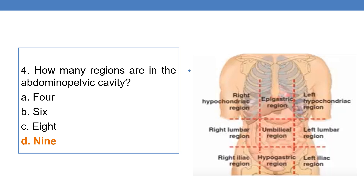Next question: how many regions are there in the abdominal pelvic cavity? This is very important. There are nine regions in the abdominal pelvic cavity. Those nine regions are: right hypochondriac region, epigastric region, left hypochondriac region, right lumbar region, umbilical region, left lumbar region, right iliac region, hypogastric region, and left iliac region. These are the nine regions of the abdominal pelvic cavity.